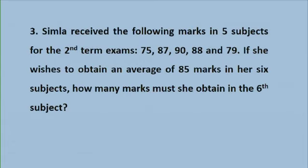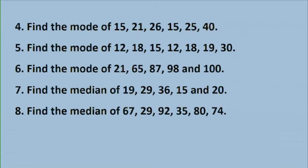Question three: Simla received the following marks in five subjects for the second term exams. If she wishes to obtain an average of 85 marks in her six subjects, how many marks must she obtain in the sixth subject? Question four: Find the mode of the given set of data. So 15, 21, 26, 15, 25, and 40. Same for questions five and six.